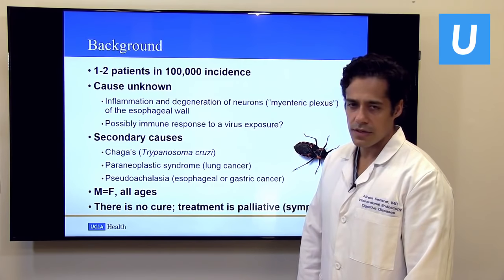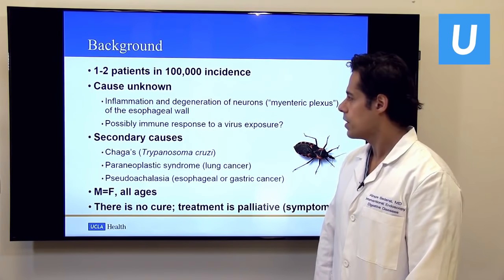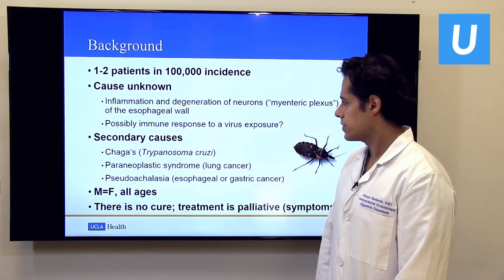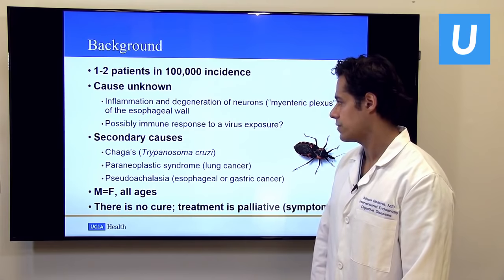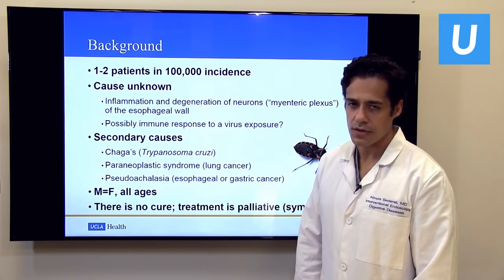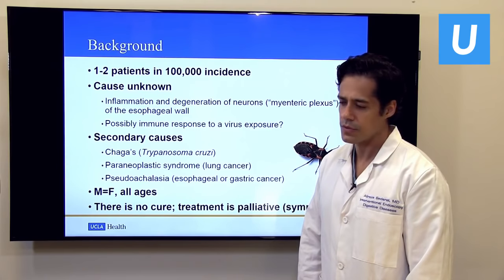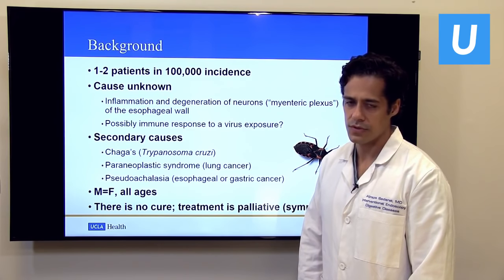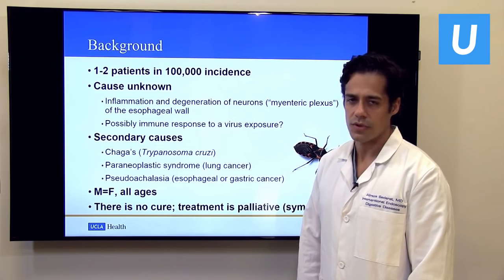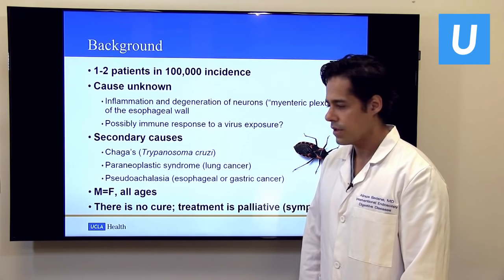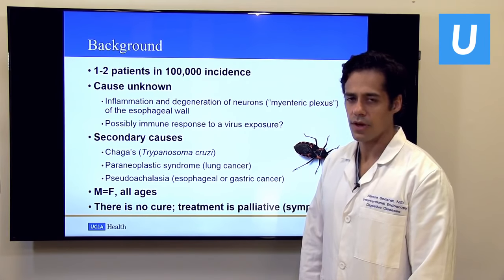Achalasia is relatively rare — one in two patients out of a hundred thousand will have it. The cause is unknown; it results from inflammation and degeneration of nerves in the esophageal wall, but what causes that injury isn't entirely clear. It may be an immune response to a previously exposed virus. Zoster (shingles), measles, and herpes simplex have been hypothesized but nothing is certain for primary achalasia.